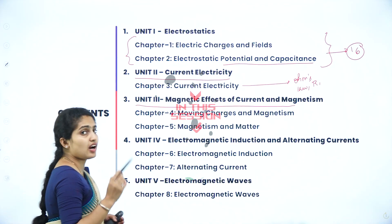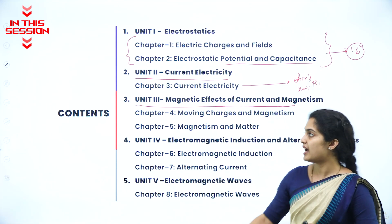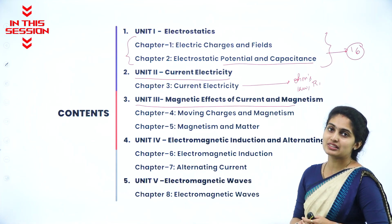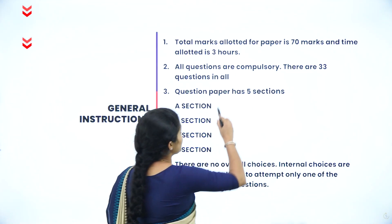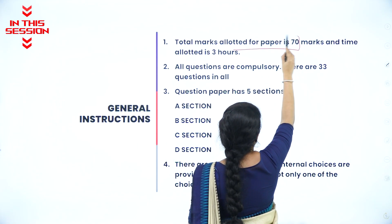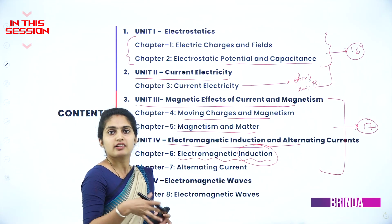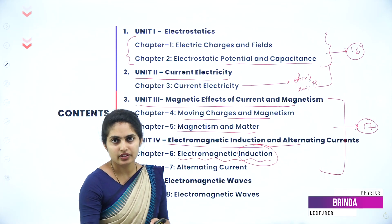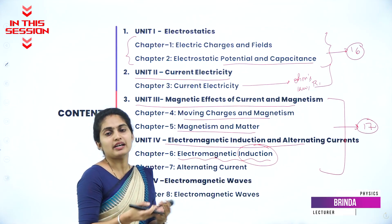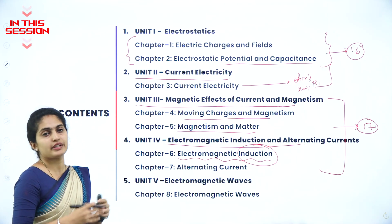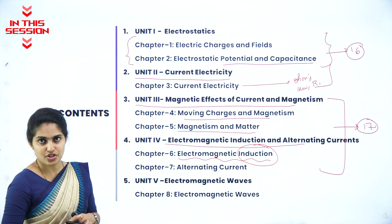Units one and two deal with static charge components, whereas magnetism, that is unit three, deals with moving charges. Due to magnetic field, current is induced; due to electric field, magnetic field is induced. There is mutual understanding between the two fields, which is why it is called Electromagnetic Induction.